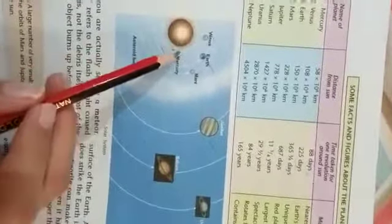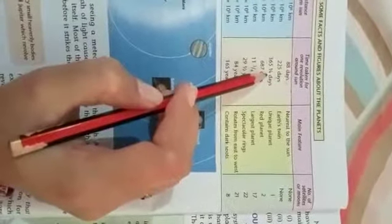Here are the eight planets of the solar system. And in this table they have given the name of the planet, their distance from the sun, how much time they are taking in the revolution, their main features, and the number of satellites.